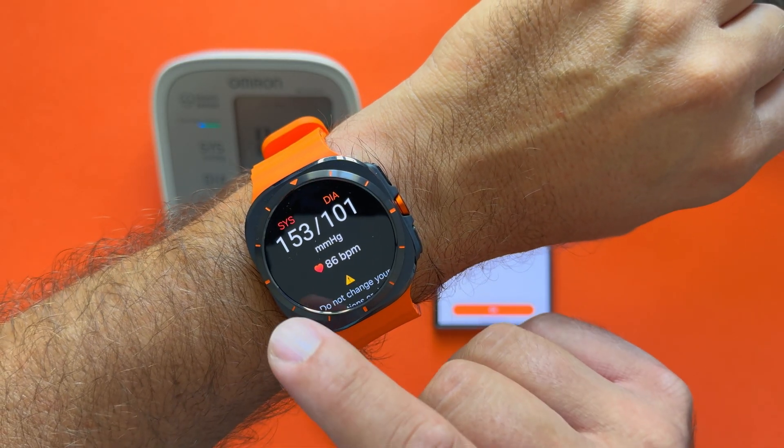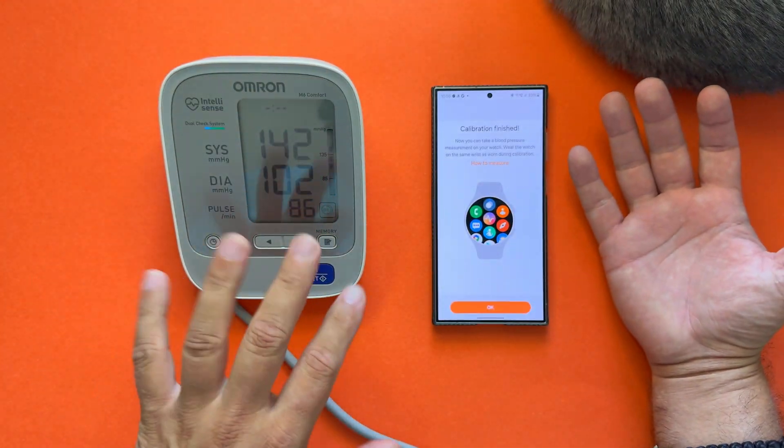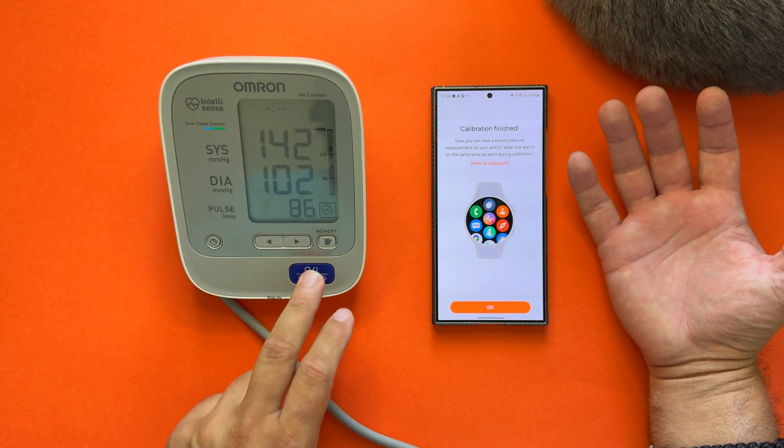All right, the watch is reporting 153 over 101 with 86 BPM. This is the pulse. And now I'm going to repeat the same but with the blood pressure monitor.